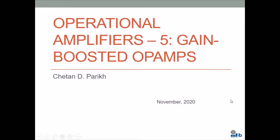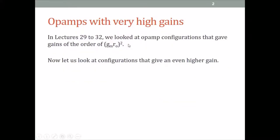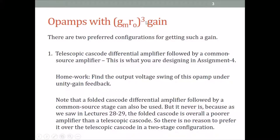This lecture we go back to the operational amplifiers chapter, chapter 9. The last three lectures we were looking at stability and compensation. Before those three lectures we had looked at op-amps that had a gain of the order of GMRO squared. We had looked at three different configurations at that time: the telescopic cascode, folded cascode, and the two-stage op-amp. Now, let us look at configurations that give an even higher gain — a gain of GMRO cubed.